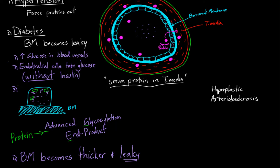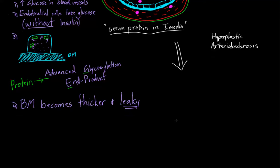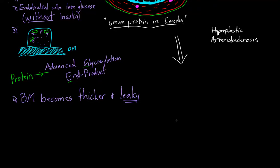I think of it as what would happen if the process of hyaline arteriolosclerosis kept going. Keep imagining this vessel, and let's say the situation continues and now you've got years and years of protein buildup in the tunica media space. What would happen next?